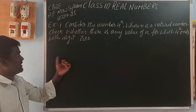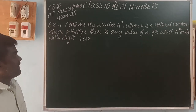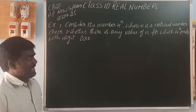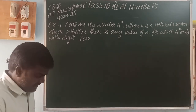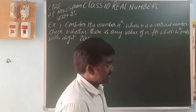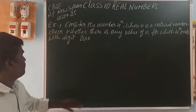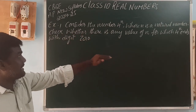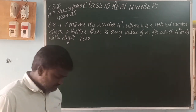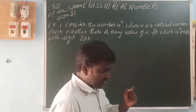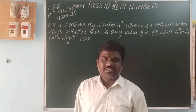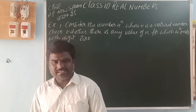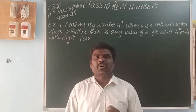First we will discuss Example 1. Consider the number 4^N, where N is a natural number. Natural number means counting numbers. Check whether there is any value of N for which 4^N ends with a digit 0. If a number ends with a digit 0, that means it is a multiple of 10, that is multiples of 2 and 5.